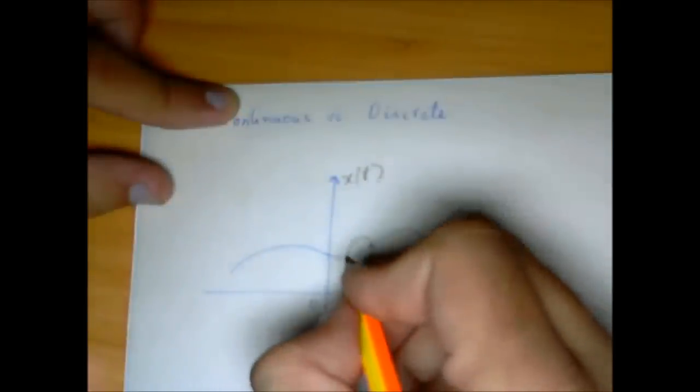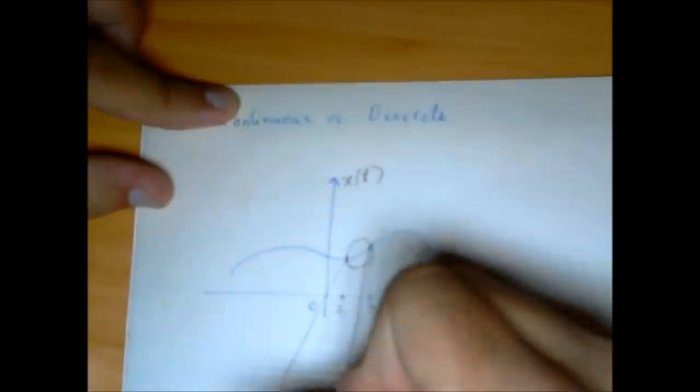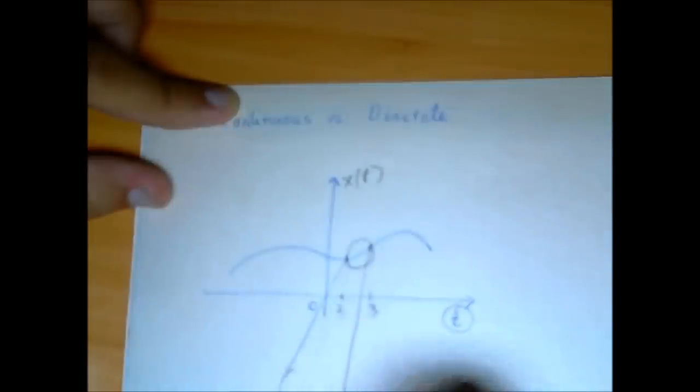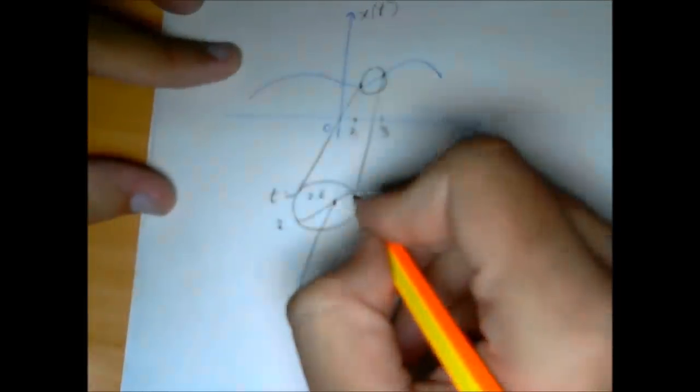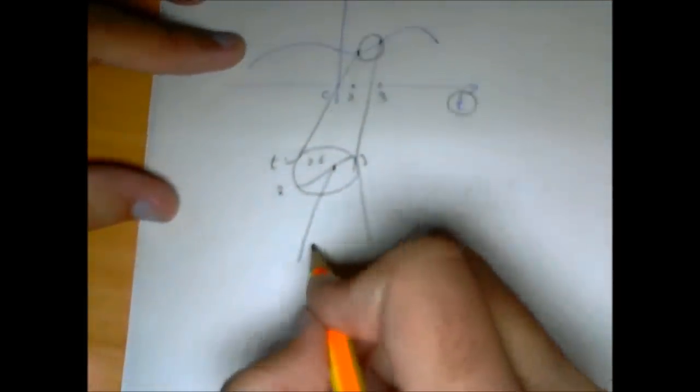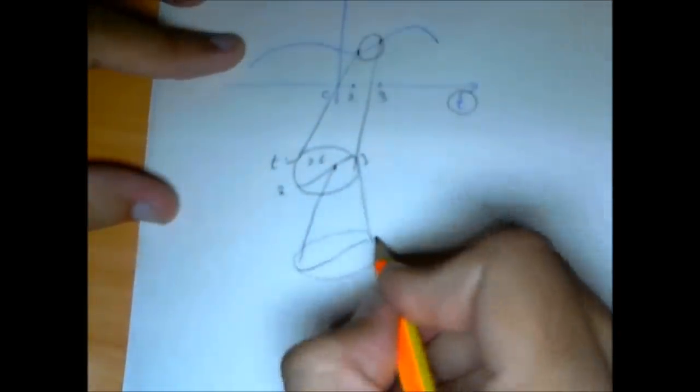If I magnify the signal, I can get probably the value at time t equals 2.6. So t equals 2.6, and I don't have to stop there. I can magnify it further.